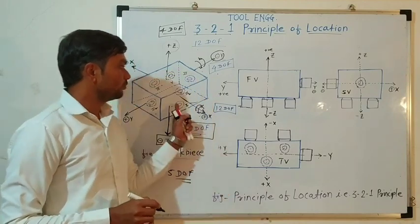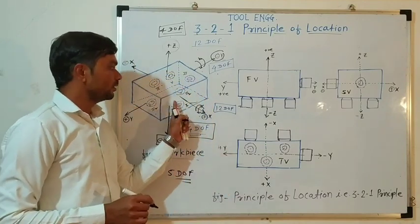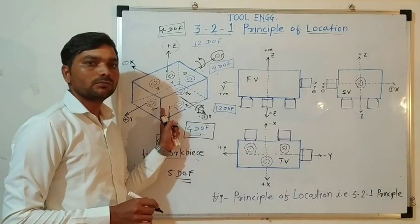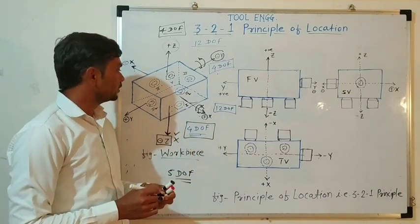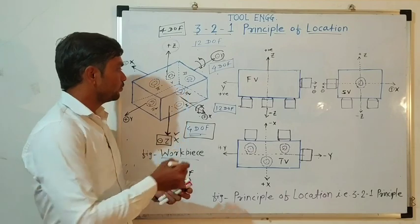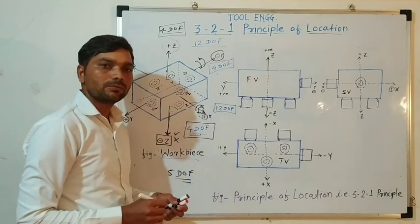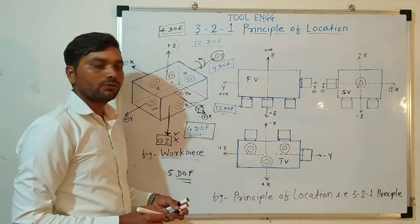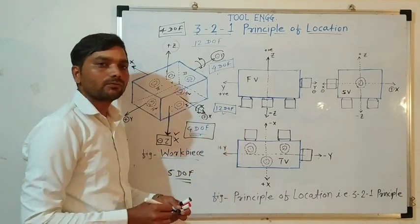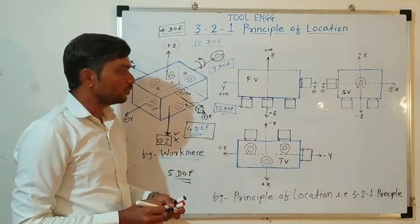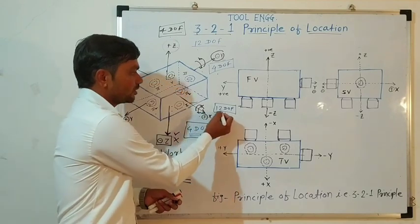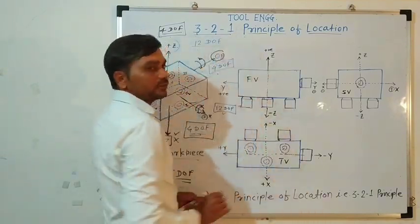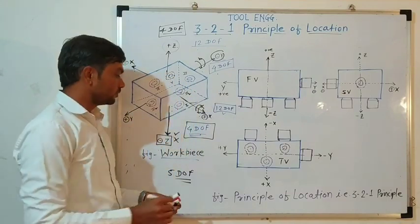Now if we consider this body as a workpiece and we have to perform a machining operation over this workpiece, then for any machining over this workpiece, we need to restrict all 12 degrees of freedom. For restriction of 12 degrees of freedom, we have to use the 3-2-1 principle.